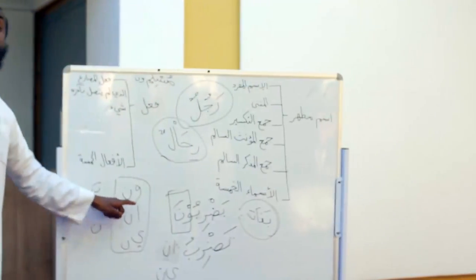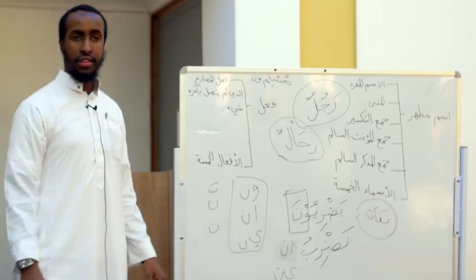In simple terms: Fi'lul Mudari' al-ladhi lam yatasil bi-akhirihi shay — as long as it's not connected to any of those endings. What you've just listed — waw-nun, alif-nun, ya-nun — that's actually called Af'alul Khamsa. Af'alul Khamsa is the opposite: it's whatever finishes with waw al-nun, alif al-nun, and ya al-nun.